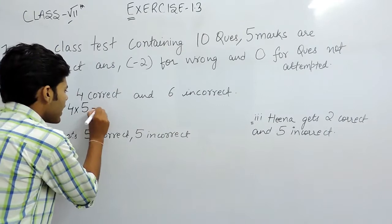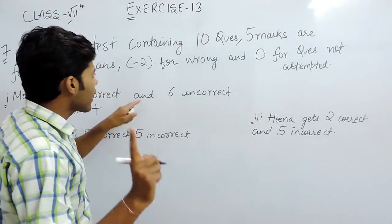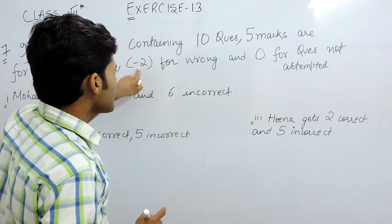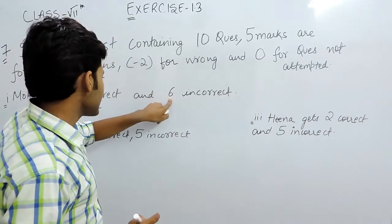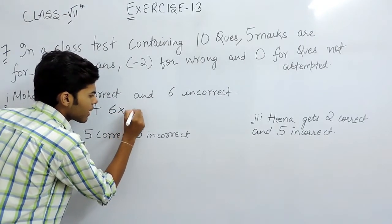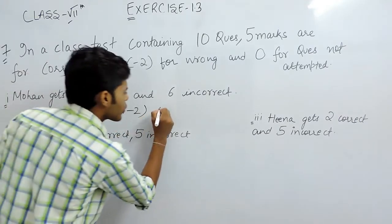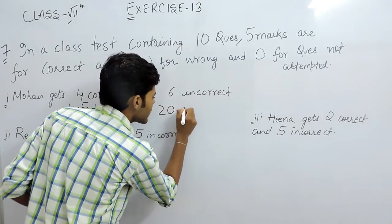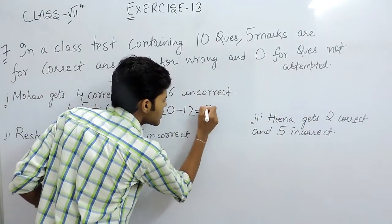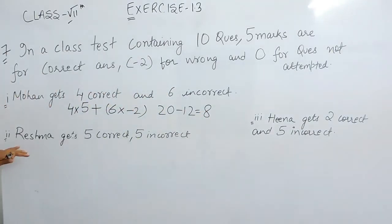Then we will add 6 incorrect. For 1 incorrect, we are taking minus 2. So for 6 incorrect, we will take 6 multiplied with minus 2. That will be 20 minus 12, and that is 8. So Mohan will get 8 marks.